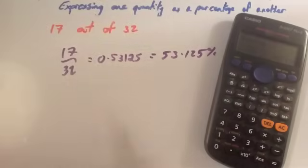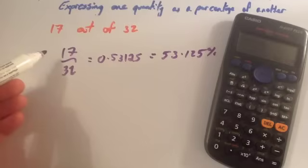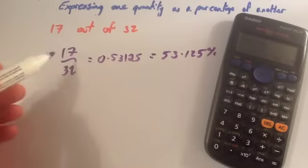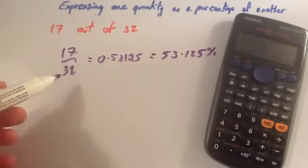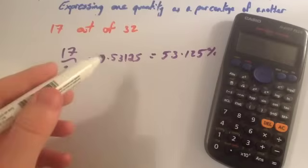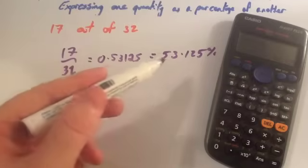This is how you would change your test scores to percentages. You divide the top number of your fraction by the bottom one, you get your decimal, and you times it by 100.